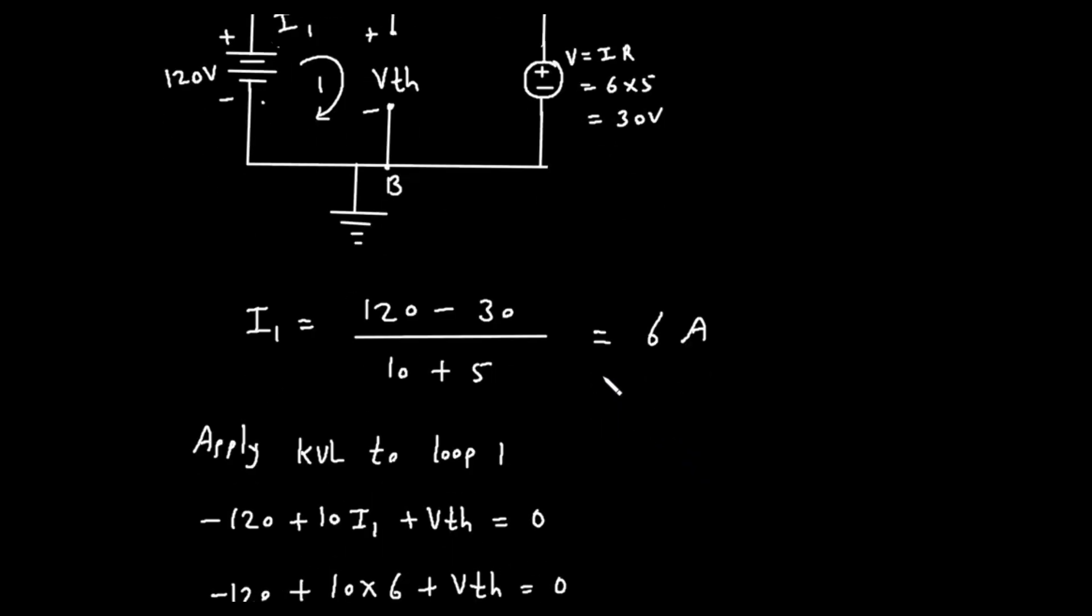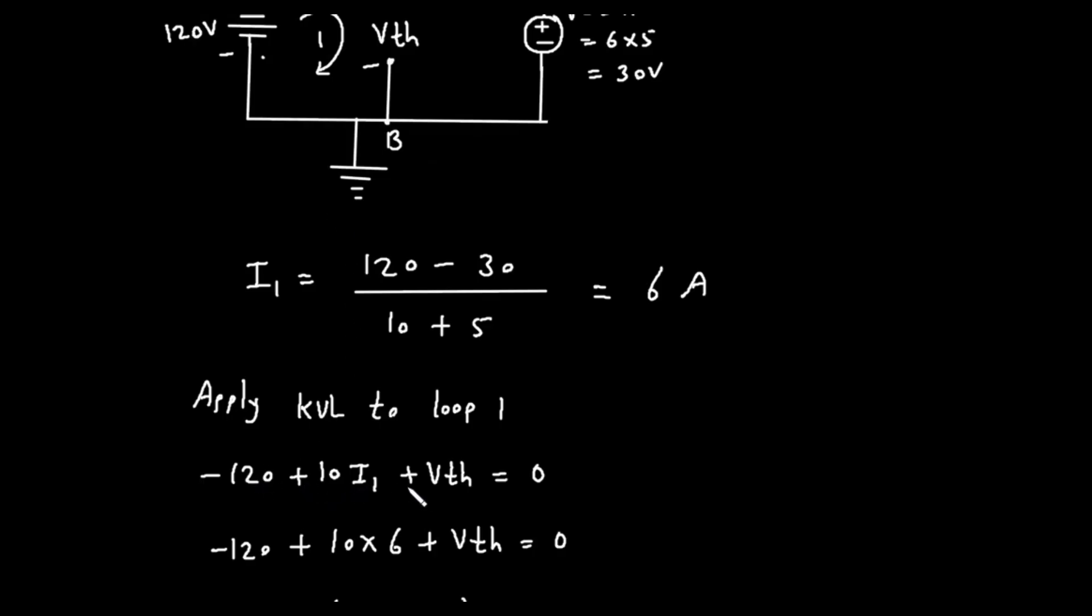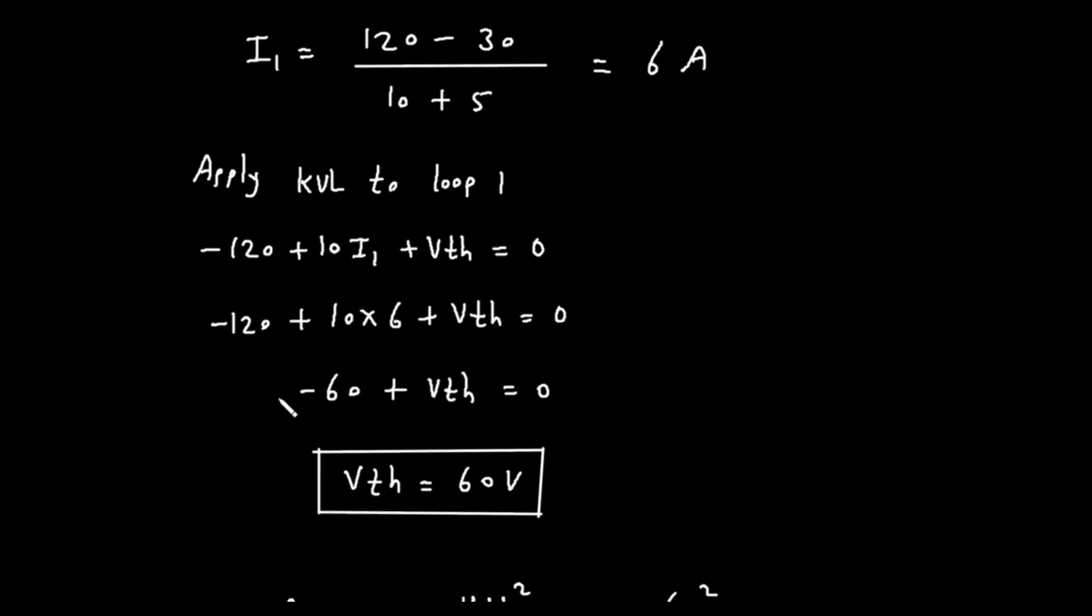Now that we have the value for the current I1, we can find the Thevenin voltage, VTH, by applying Kirchhoff's voltage law, or KVL, to the leftmost loop. Let's start from the negative terminal of the 120 volt source and move clockwise. The KVL equation is, negative 120 volts, plus the voltage drop across the 10 ohm resistor, plus the Thevenin voltage VTH, all equals 0. The voltage drop across the 10 ohm resistor is 10 times I1. So, the equation is, negative 120 plus 10 times I1 plus VTH equals 0. We just calculated I1 to be 6 amperes, so we substitute this value into the equation. This gives us, negative 120 plus 10 times 6 plus VTH equals 0. 10 times 6 is 60. So the equation simplifies to, negative 120 plus 60 plus VTH equals 0.